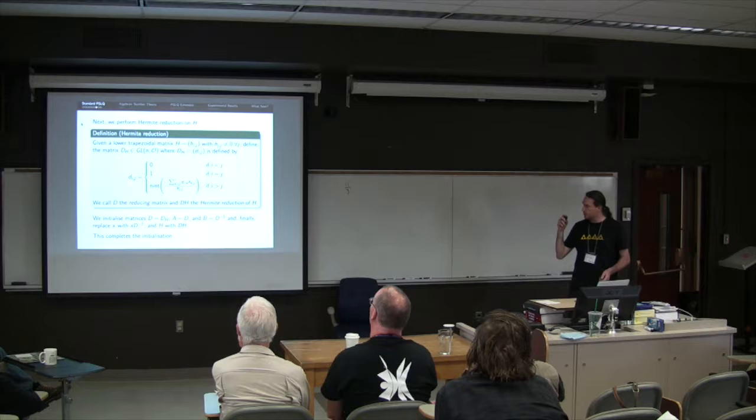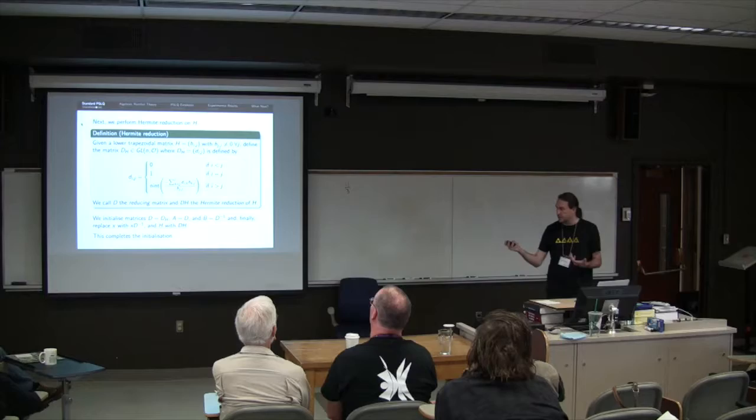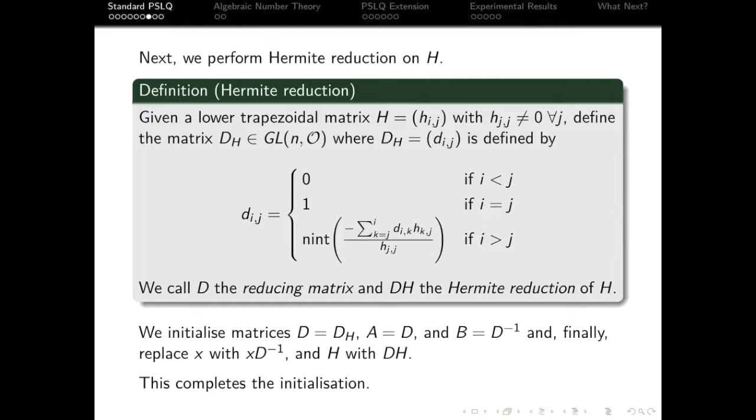So next, we perform the so-called Hermite reduction. This is going to be important later on for my extensions. Hermite reduction is defined for a lower trapezoidal matrix, and we actually construct an integer invertible matrix, where the inverse has integer entries as well, GLN0, using this recursive formula.